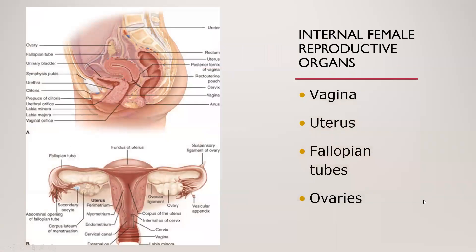In a cutout view, you have the urethra which goes to the bladder — that's where we would put a Foley catheter. You have the vagina which goes to the uterus, where the fetus will grow. And then you have the anus which goes to the rectum, which is the bowel, and that is where stool comes out.